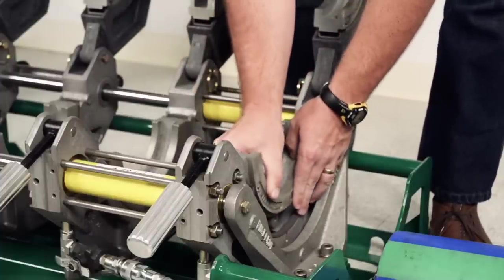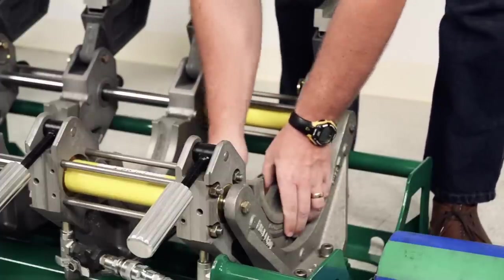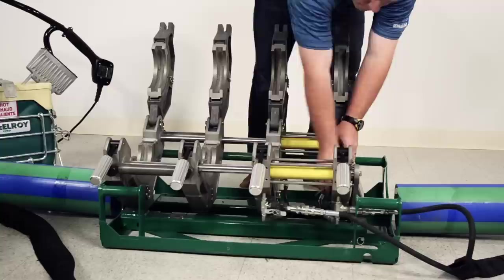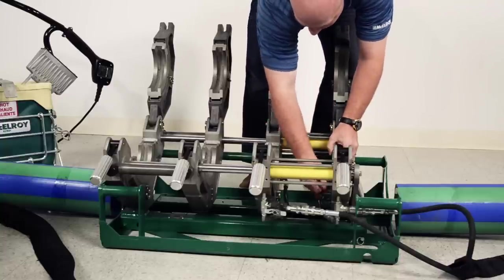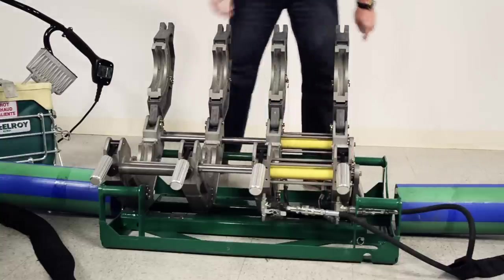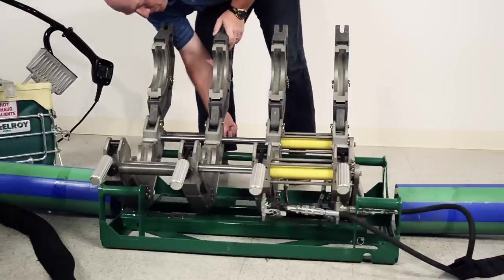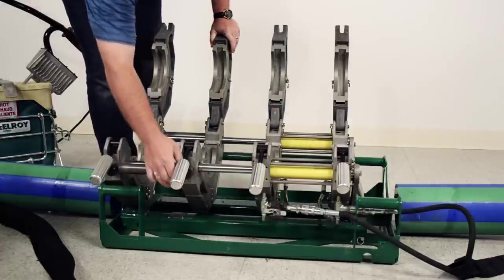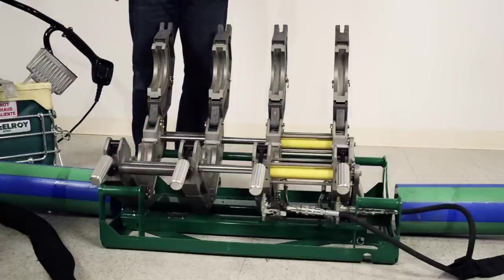Aquatherm pipes are sized using a dual naming system. Take a look at the print line. We see a 6 inch and 160 millimeter designation. The inch size is a nominal size. It should not be used to select inserts for the fusion machine. The inserts for the fusion machine should match the metric size that is indicated on the print line. We have selected 160 millimeter inserts for this fusion.